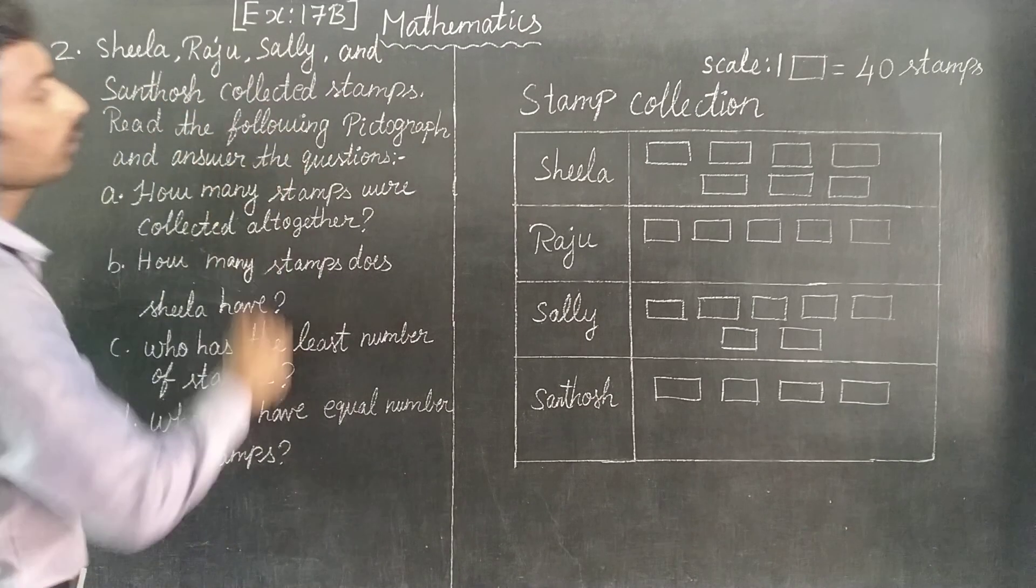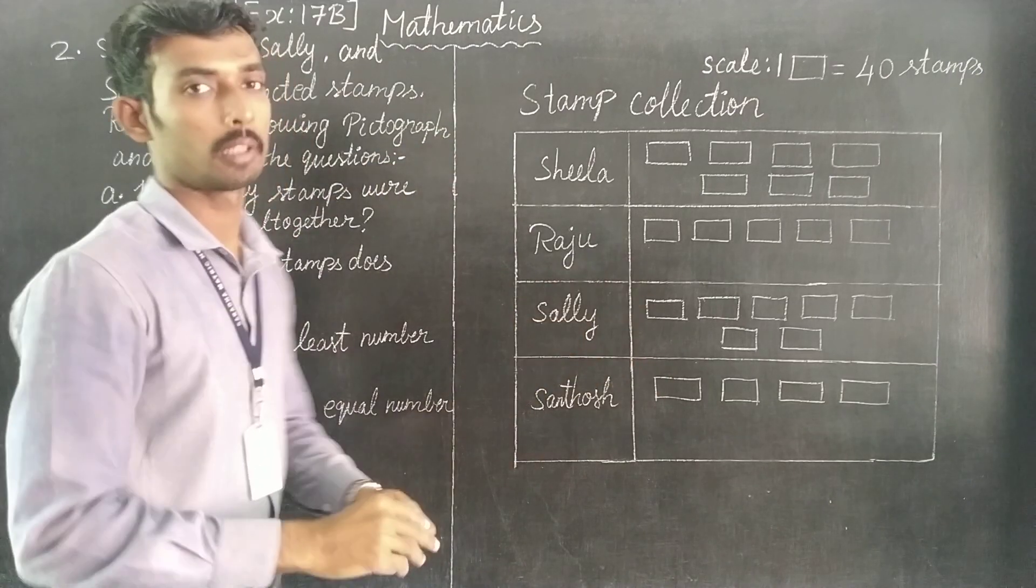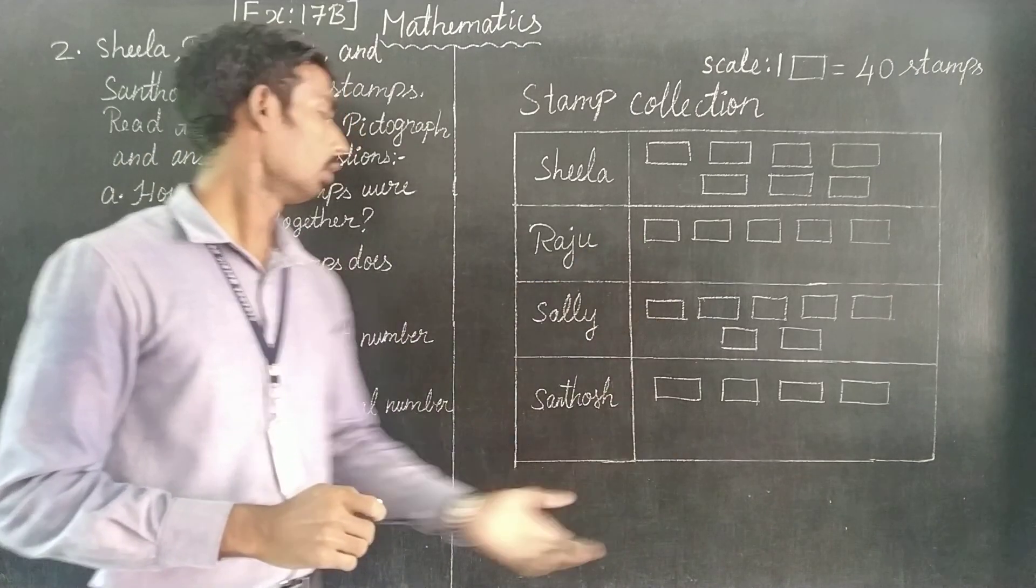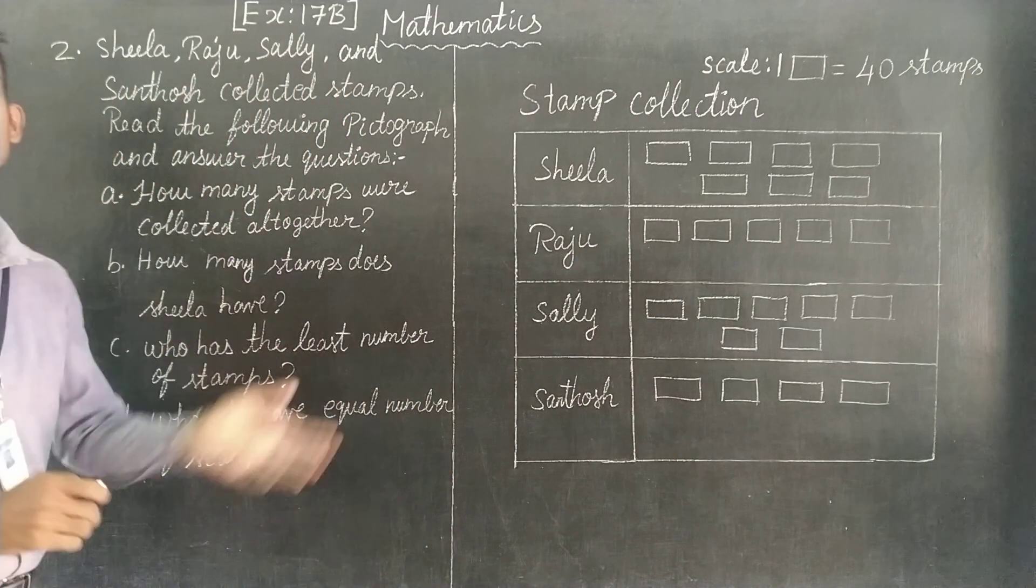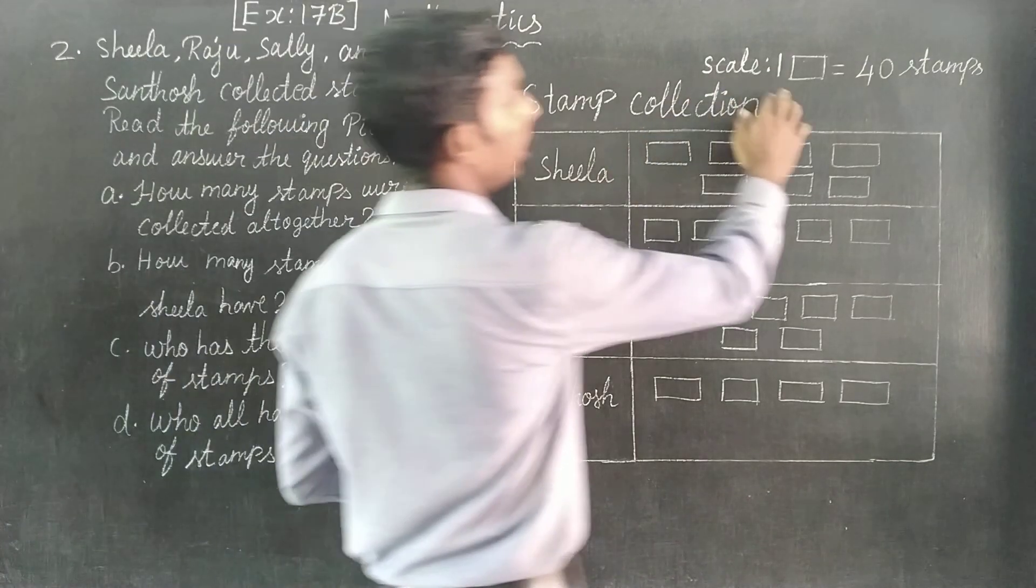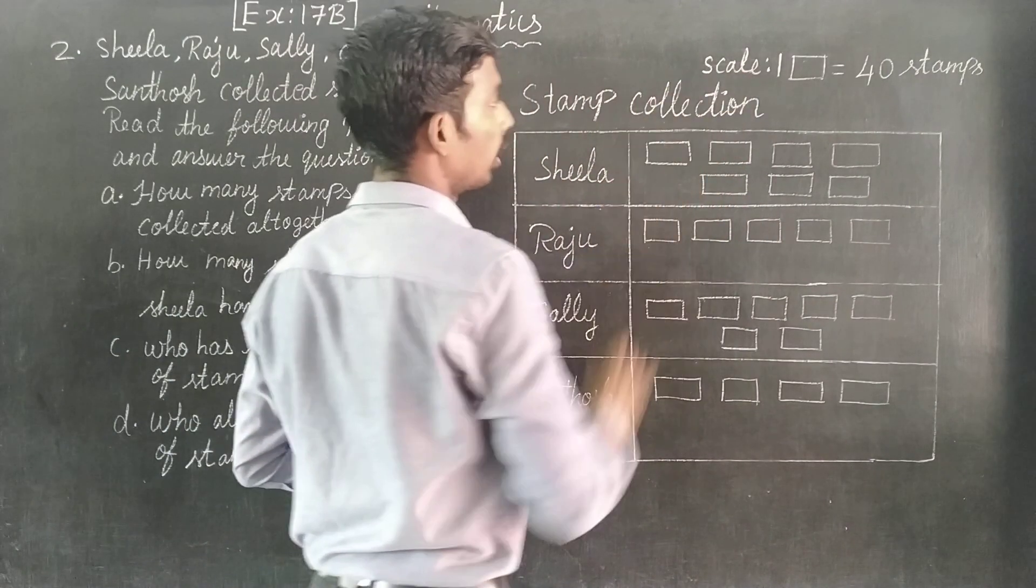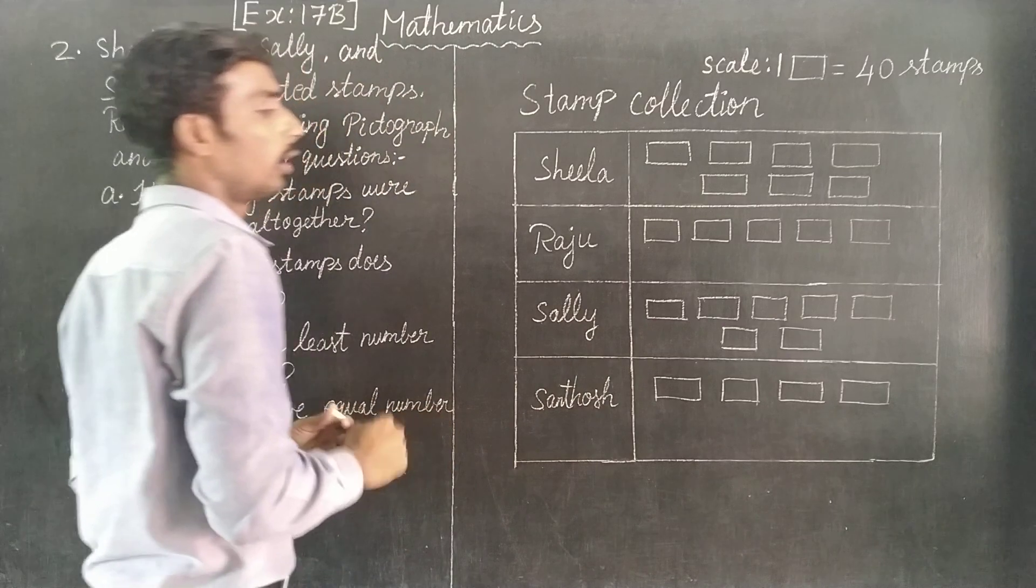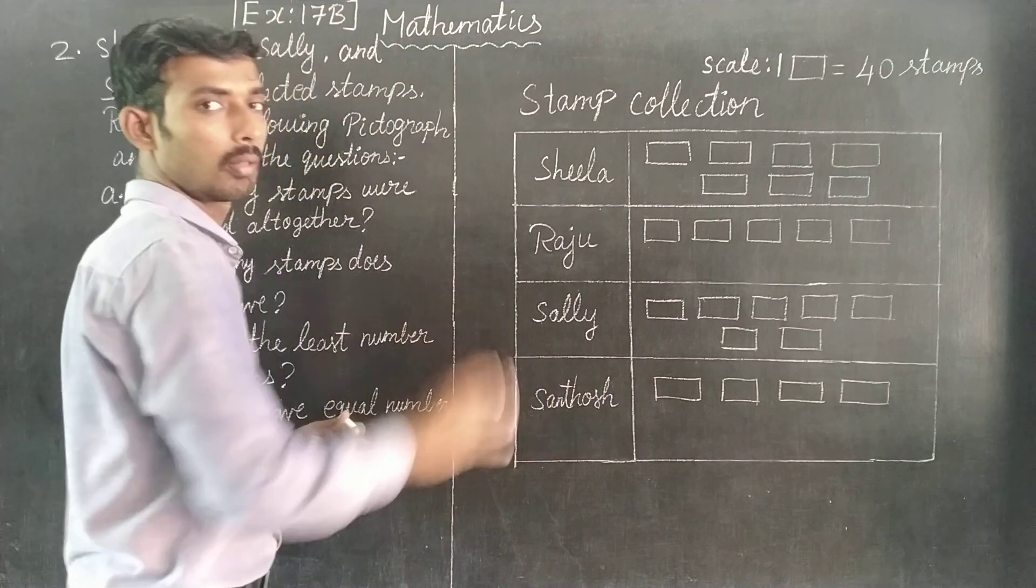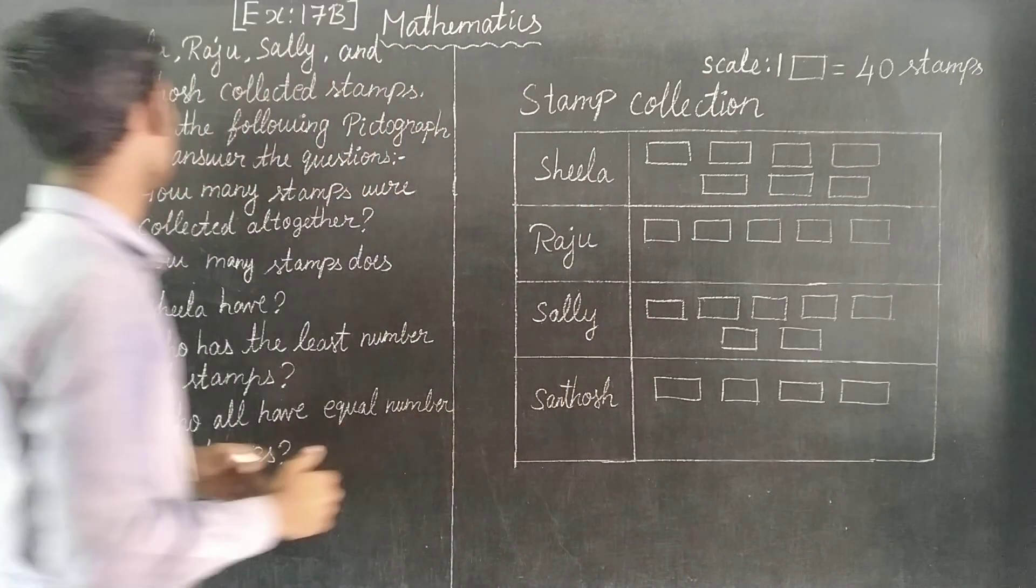This is a pictograph. First we will talk about the answer. First we will talk about one symbol equals 40 stamps. Stamp collection - who is Sheela, Raju, Sally and Sandosh. So this is a pictograph.